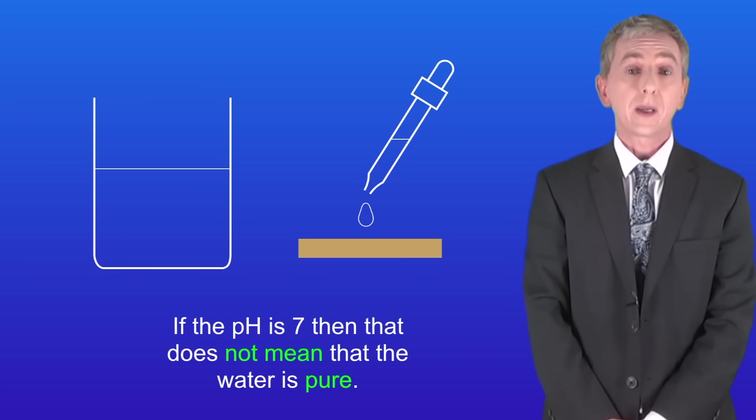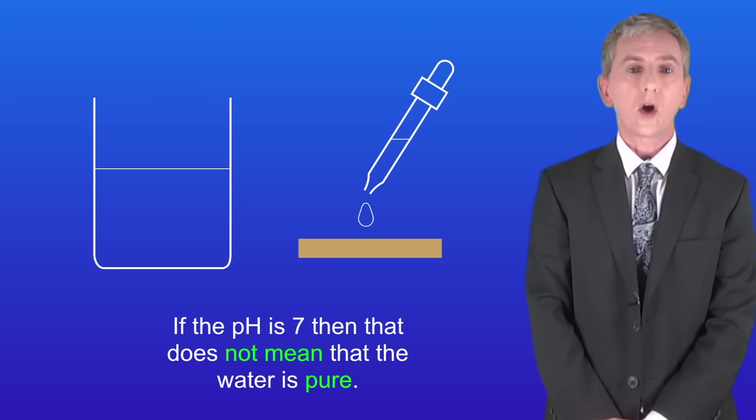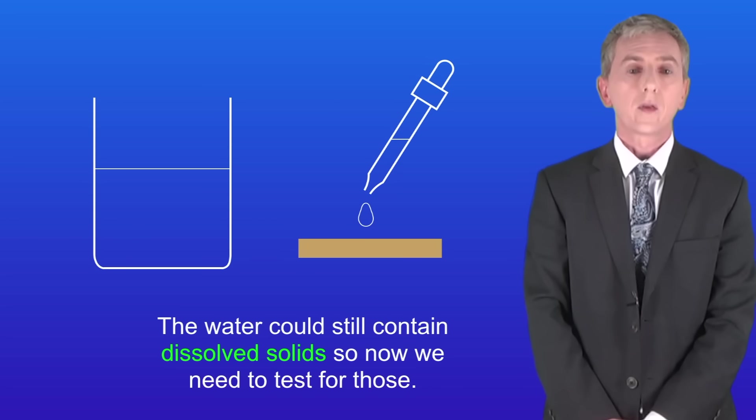Now if the pH is 7, that does not mean that the water is pure. The water could still contain dissolved solids so now we need to test for those.